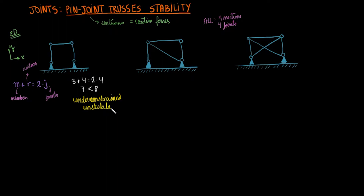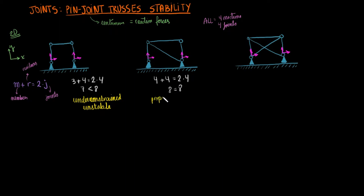On the second system, we have four members. As a result, we end up with the equality satisfied, where 8 equals 8. This means that the system is properly constrained and can be in equilibrium. We can call this system stable or determinate.